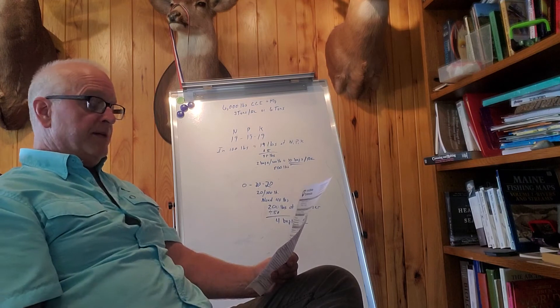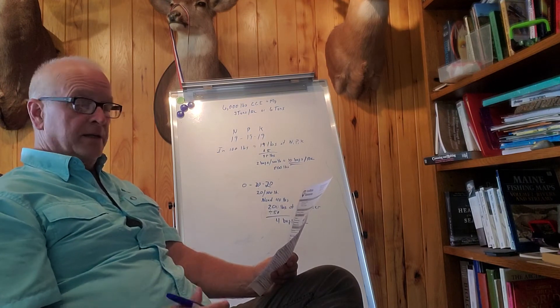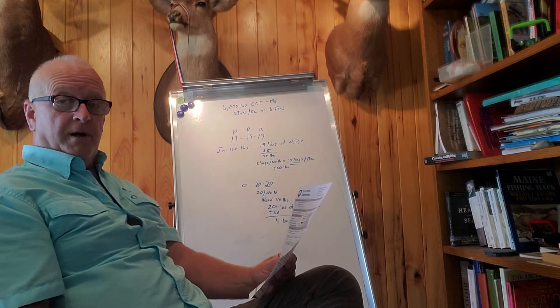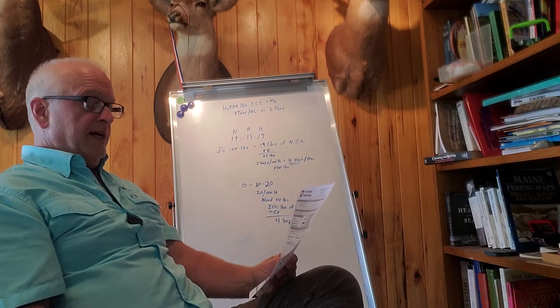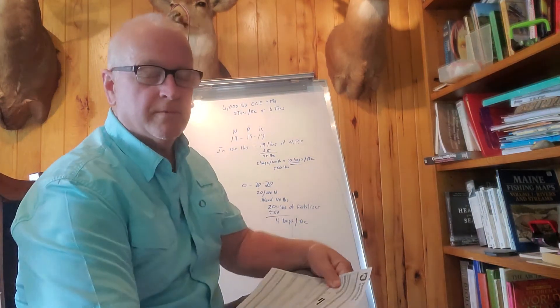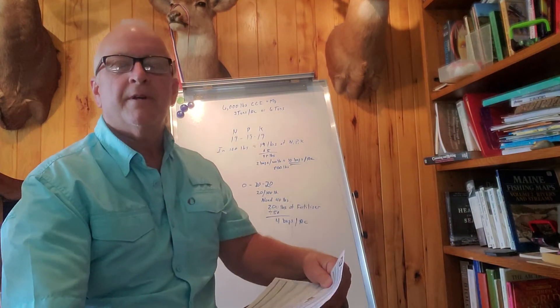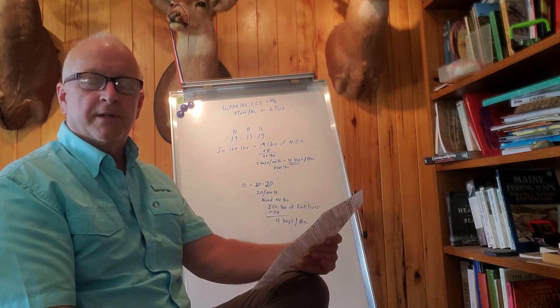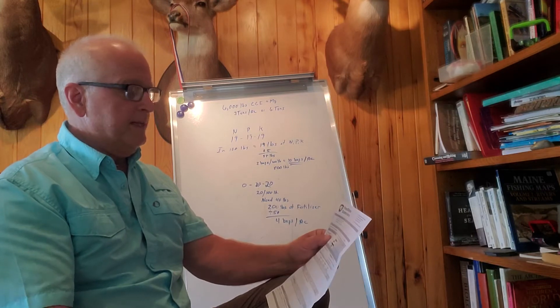5.3 is not going to let you grow much of anything that we like to grow for forage crops for deer. Lots of native plants will grow in that kind of pH, but we want really rich, nutritious, attractive, palatable type of growth.